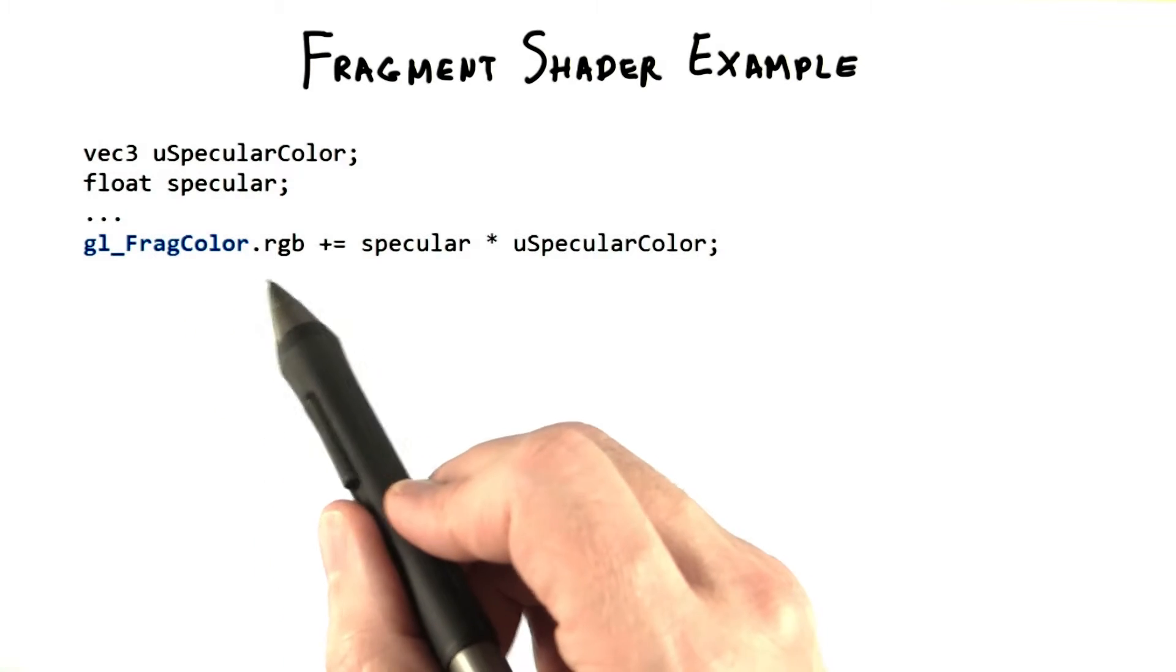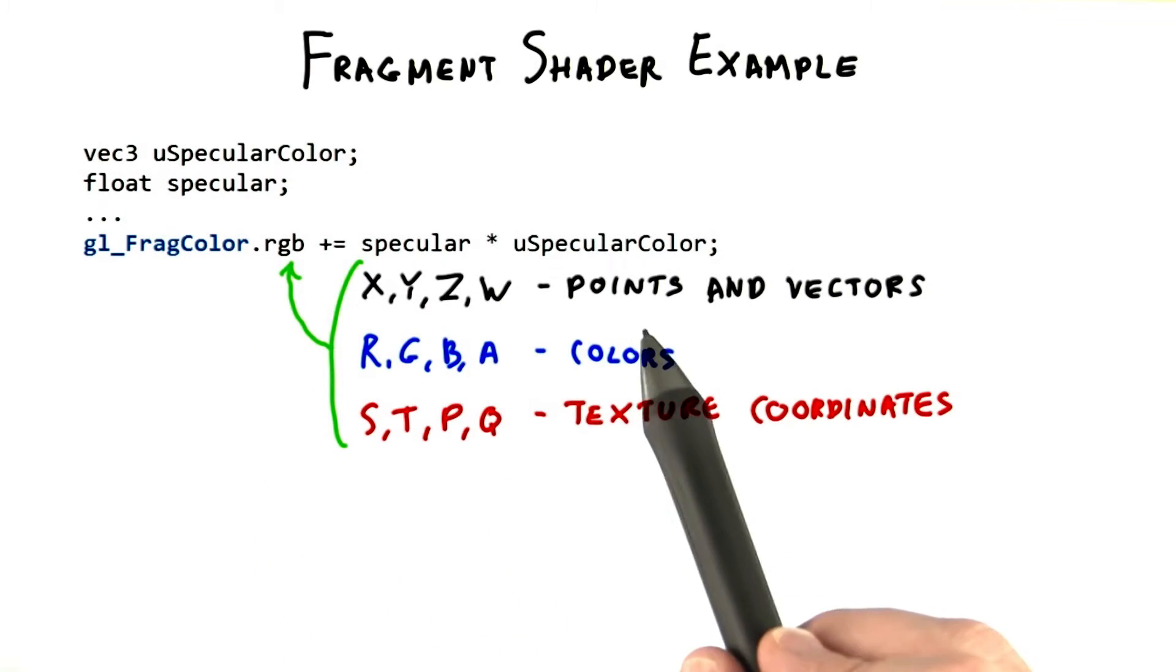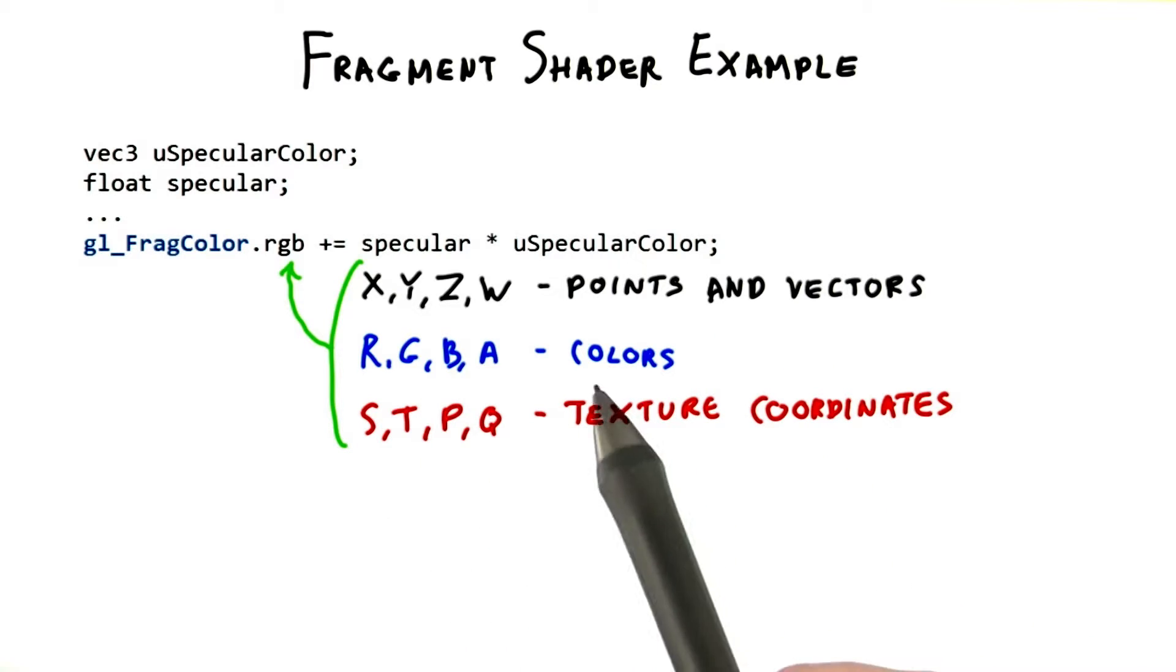We add this to the fragment color by specifying which components we want changed. Here the R, G, and B components are modified. The component names for the four elements are XYZW for points and vectors, RGBA for colors, and STPQ for texture coordinates.